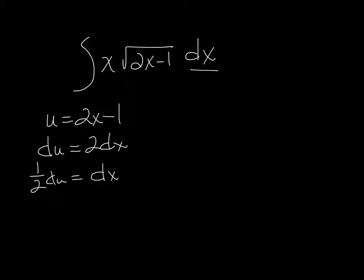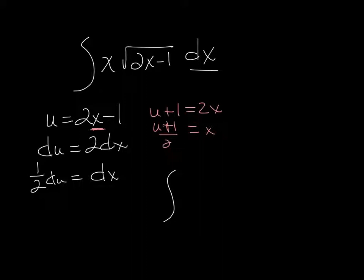What we can do is go back to our u and solve for x. So u plus 1 equals 2x, and x equals (u plus 1) over 2. So I've got to substitute two things here. It was easy to see what u needed to be because that's under the radical, which is sometimes a little difficult to deal with. So once I know what u is, since I have that extra x, I can solve my u equation for x and then make two substitutions. So when we substitute, we have x which is (u plus 1) over 2, times u to the 1/2, times one-half du.